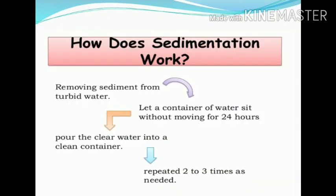Now let us know how sedimentation works. The suspended particles present in water are removed by leaving the water in a sedimentation tank undisturbed for a period of 24 hours. After the sediment settles to the bottom, the clear water is poured into another tank, and this process is repeated two to three times as needed.